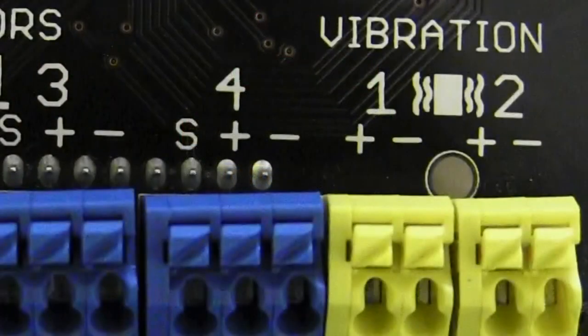Okay, now we can start on vibration motors. There are two vibration motor ports on the board colored in yellow.